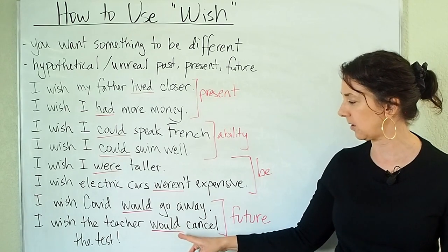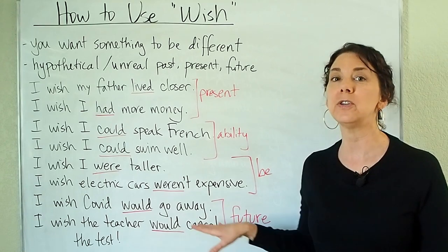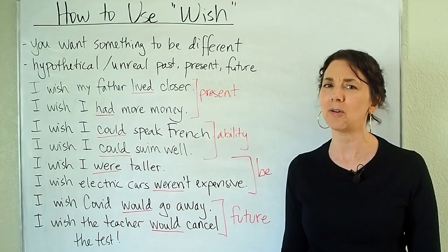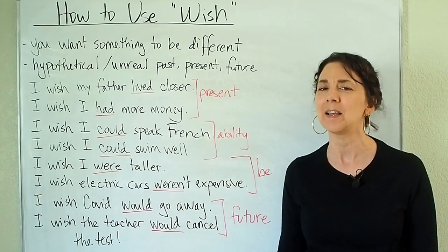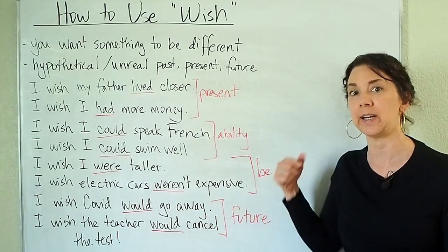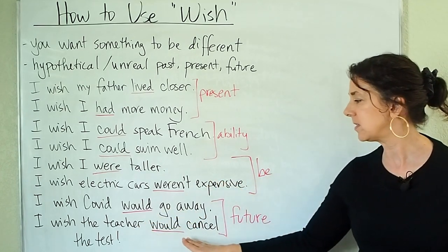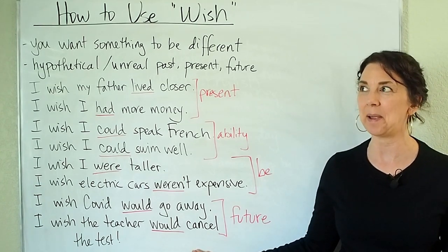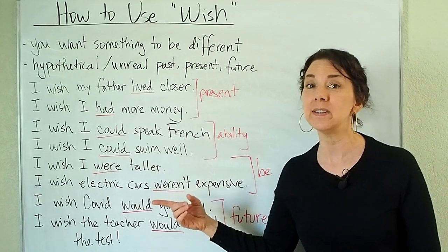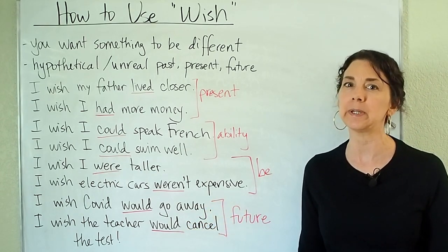Also take a look here for the second clause: if we're talking about the future, we're not going to use will — we're going to use would. For example: I wish COVID would go away. Is COVID going to go away? Probably not, but I wish it would go away. I'm talking about something that I wish were different in the future, so I'm going to use would. Or: I wish the teacher would cancel the test. In my mind I'm thinking that I wish this situation were different — maybe tomorrow or next week — but it's probably not going to happen.